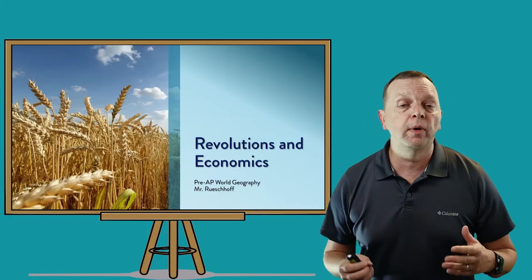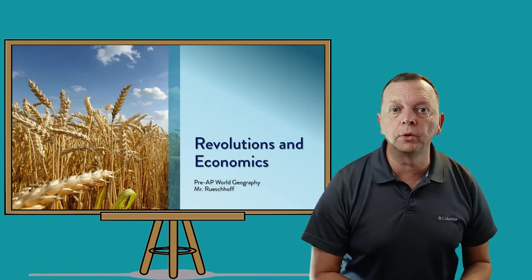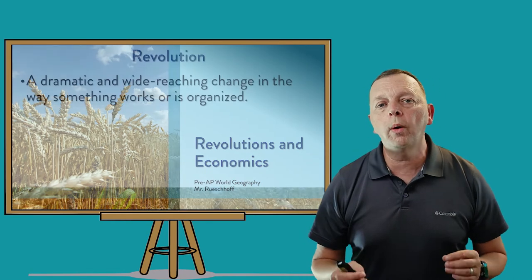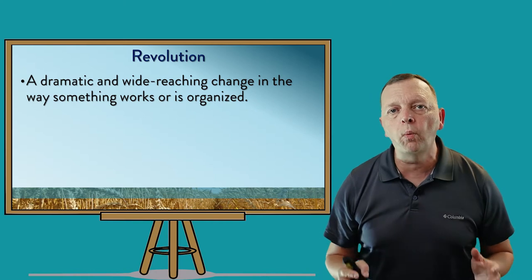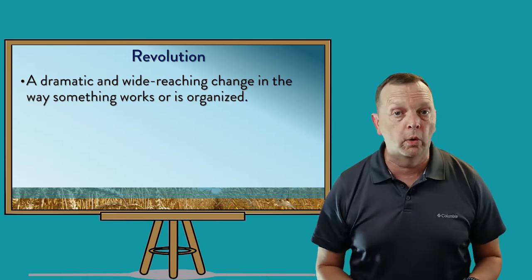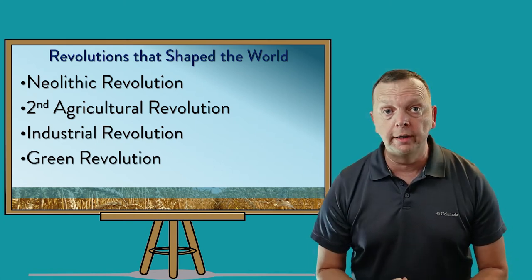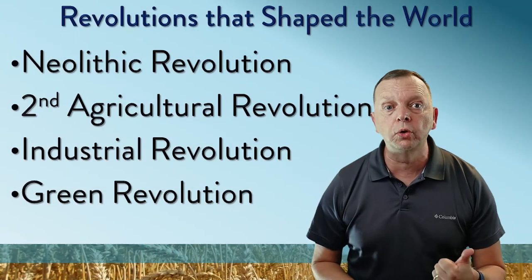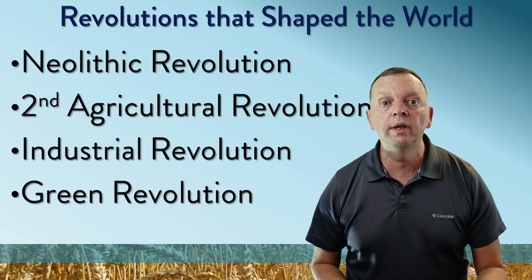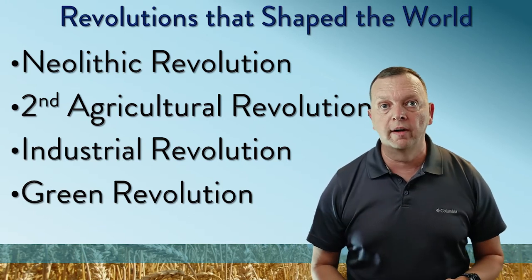Alright, so in this lesson, what we're going to do is explain how the agricultural and industrial revolutions have changed the world and have given us the economic systems that we have today. We're not talking about revolutions where a government had been toppled, like in the American Revolution. What we're talking about is a dramatic and wide-reaching change in the way something works or is organized. There are four major revolutions we're going to talk about: the Neolithic Revolution, the Second Agricultural Revolution, the Industrial Revolution, and something known as the Green Revolution.